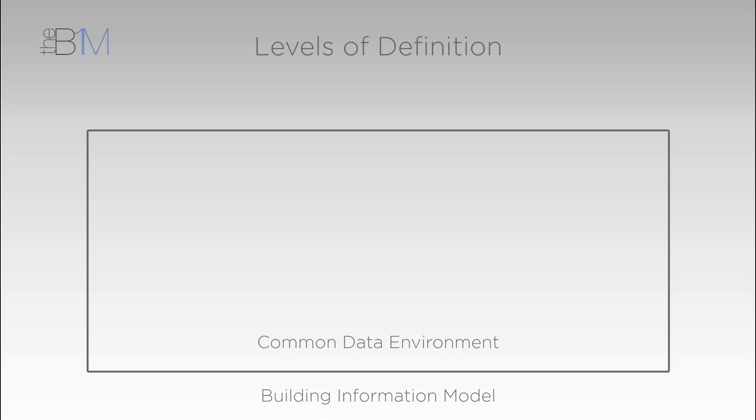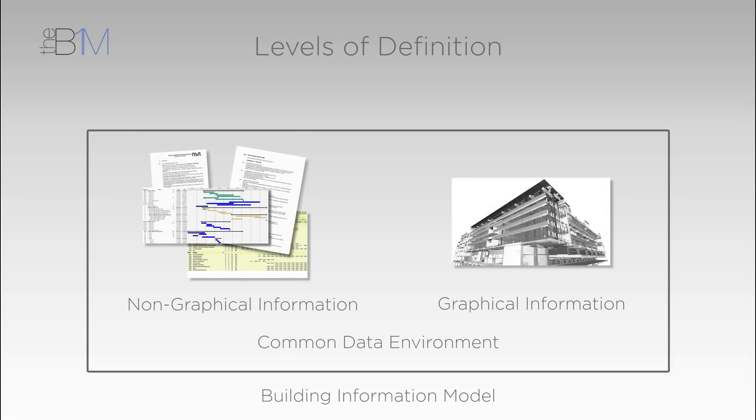The different amounts of data are known as levels of definition. A building information model contains both graphical and non-graphical information, accurately linked and clearly structured.